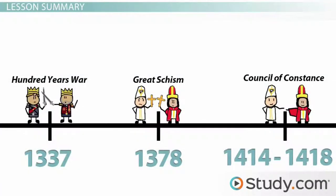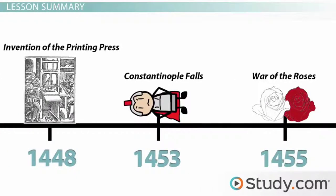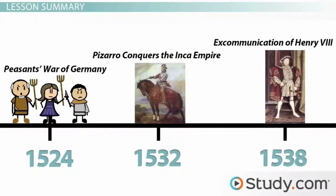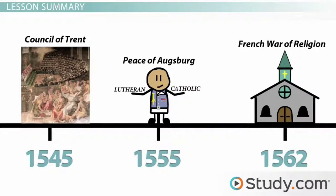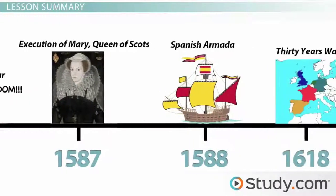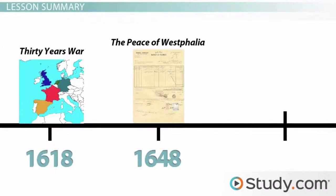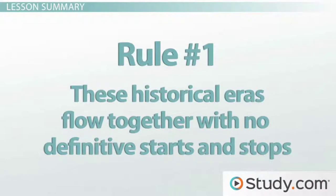So there you have it — a quick timeline for four exciting yet confusing eras. Now that we've finished, please remember our two rules. Rule number one: these historical eras — the Renaissance, the Reformation, the Age of Discovery, and the Elizabethan Era — all flow together with no definitive starts and stops.